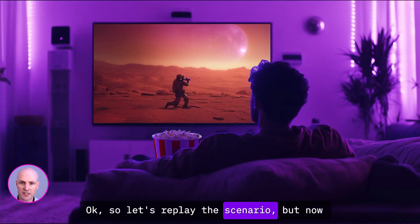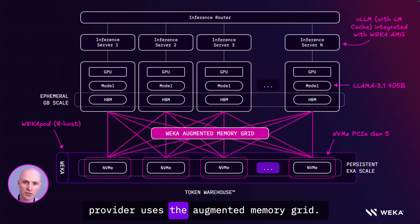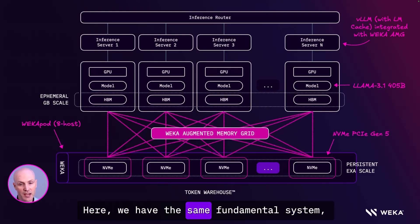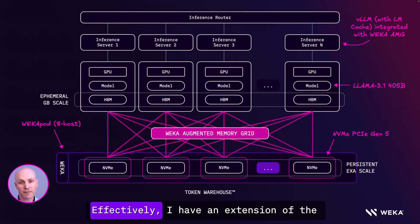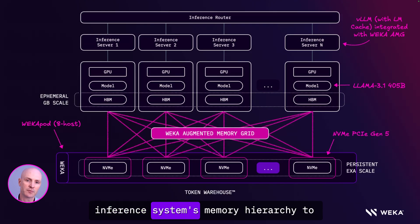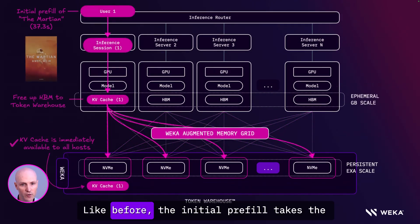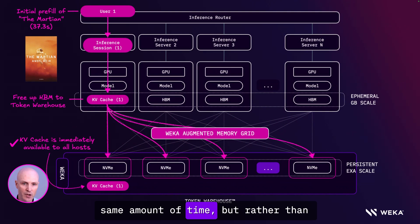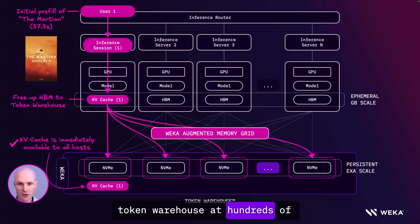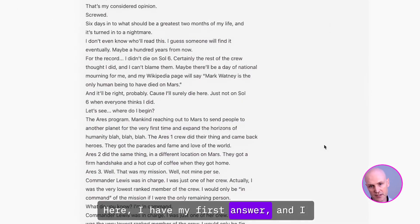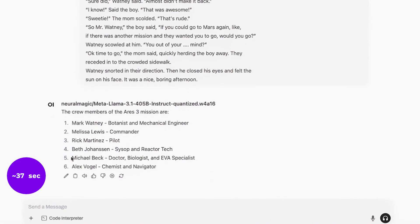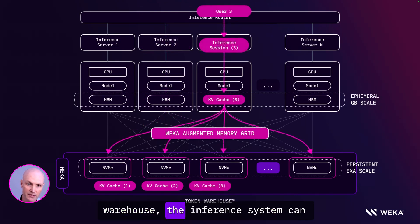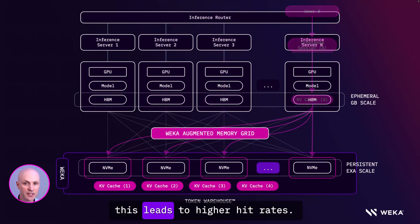Let's replay the scenario, but now in the world of Weka, where my inference provider uses the Augmented Memory Grid. Here we have the same fundamental system, but now we have Augmented Memory Grid caching to our token warehouse. Effectively, I have an extension of the inference system's memory hierarchy to the token warehouse. Like before, the initial pre-fill takes the same amount of time, but rather than being saved to local DRAM when HBM is under pressure, we push it to our local token warehouse at hundreds of gigabytes per second. And here I have my first answer.